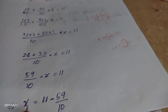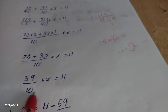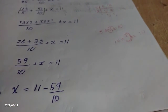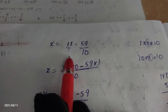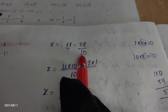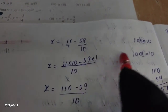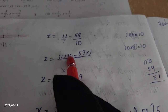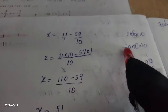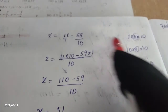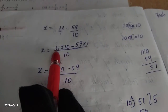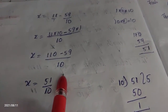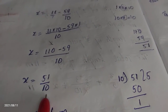To find X, we move 59 by 10 to the other side: X equals 11 minus 59 by 10. LCM of 1 and 10 is 10. So 11 becomes 110 by 10. Therefore X equals 110 by 10 minus 59 by 10 equals 51 by 10.